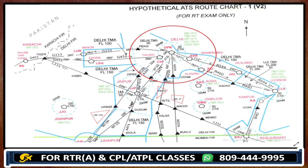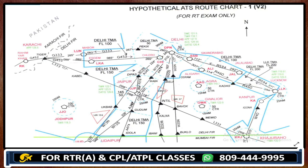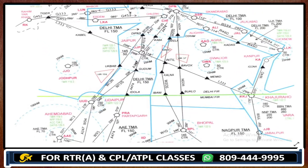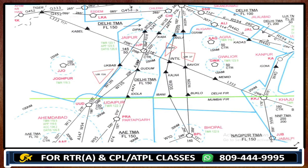Over Delhi Papa November, we have SMC, tower, and approach control. So over Delhi, we would contact Delhi ground. In the second situation, if there is no SMC available — for example at Jaipur, where chart number one shows only tower and approach with no SMC — we would check our radio with Jaipur tower.